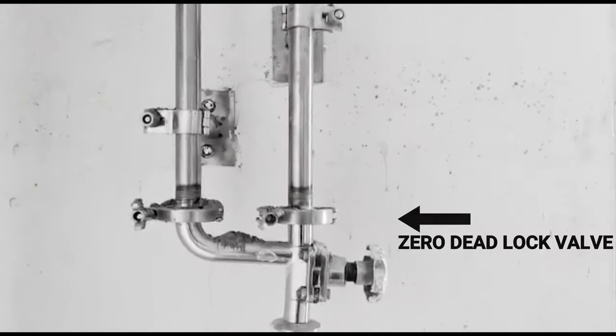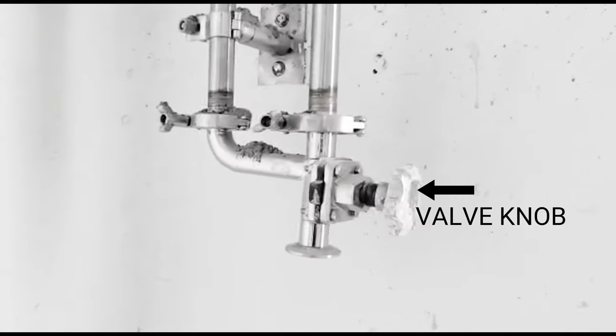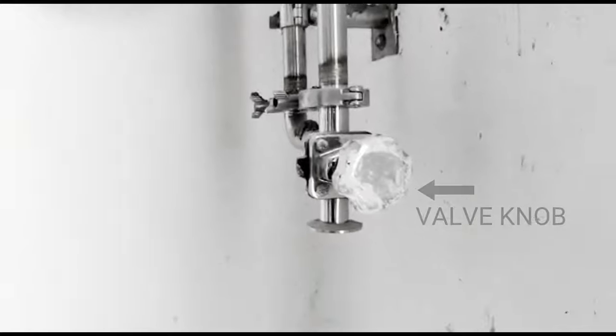These pipes are connected to a zero deadlock valve. Here the valve has a knob through which we can open or close the water supply to the machinery through the underside of the valve.